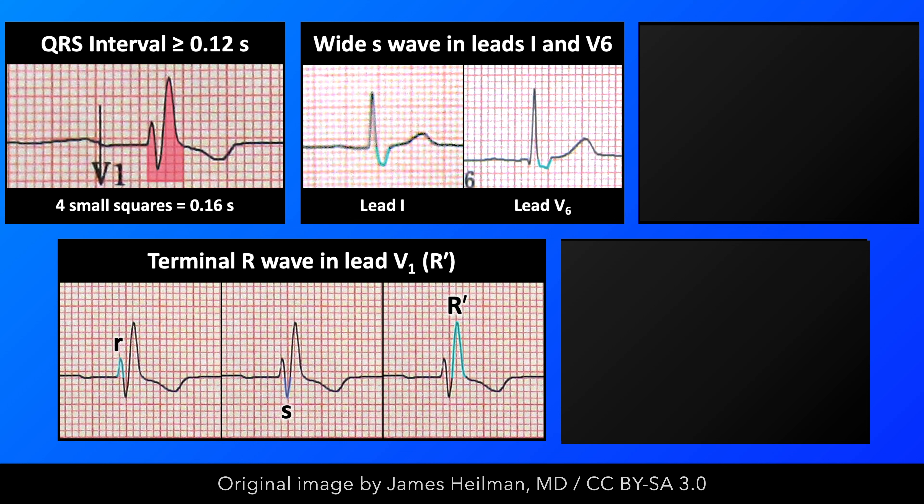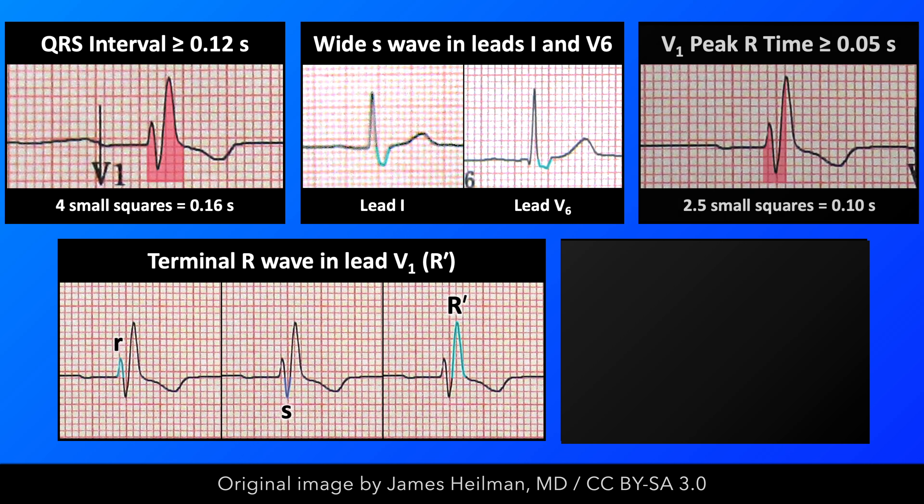The ECG features associated with a right bundle branch block include QRS prolongation, a large terminal R wave in right-sided leads, a broad or slurred S wave in left-sided leads, a prolonged peak R time in V1, and discordance of the ST segment and T wave.